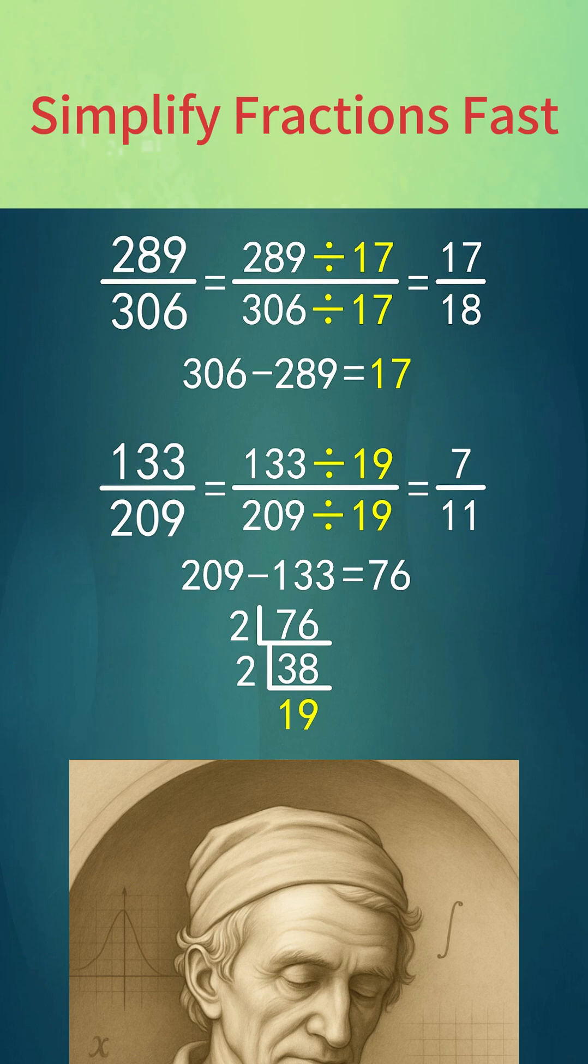To summarize, first subtract the smaller number from the larger one. If the difference is prime, that prime is the greatest common divisor.